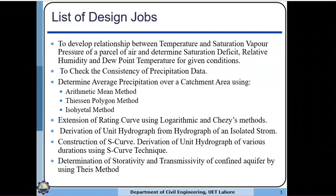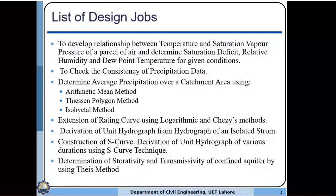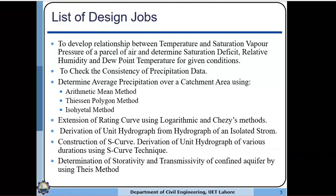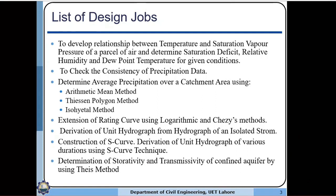These are the listed design jobs you have to carry out during this lab course. The first one, which we start today, is to develop a relationship between temperature and saturation vapor pressure of a parcel of air, and to determine saturation deficit, relative humidity, and dew point temperature for given conditions. You will be given temperature and saturation vapor pressure data, plot the graph, and from it find those parameters.